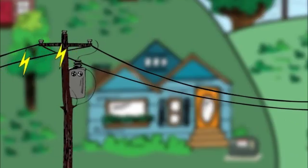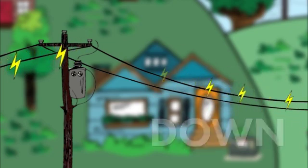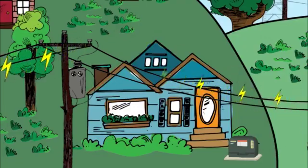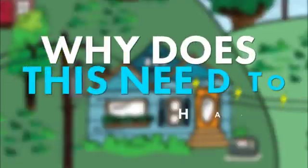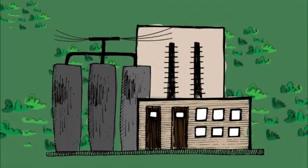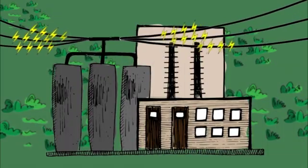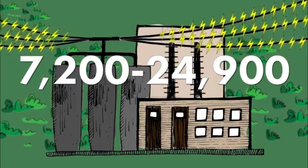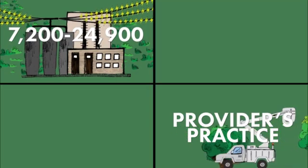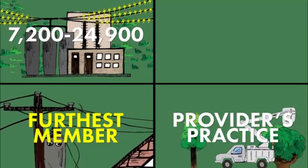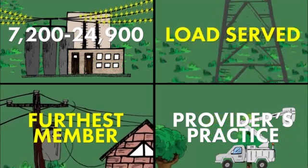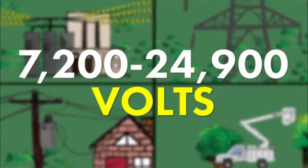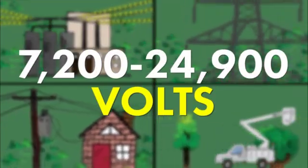Transformers are used to step electric voltage up or down before it makes its way to its final destination. Why does this need to happen? Original power distribution voltage can range from 7,200 to 24,900 volts, depending on your electric utility provider's practice, the distance to the furthest member, and the amount of load served. That's much too high a voltage for safe home or business use.